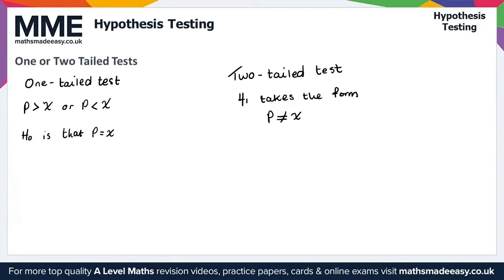So to summarise: for a one-tailed test, H1 takes the form P is greater than X or P is less than X, and H0 is that P is equal to X. For a two-tailed test, H1 takes the form P is not equal to X, and H0 is that P is equal to X, just like a one-tailed test.